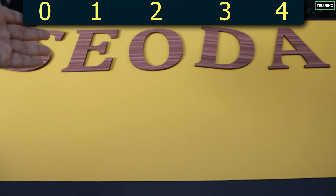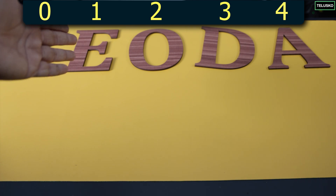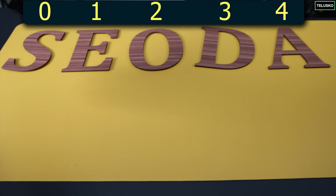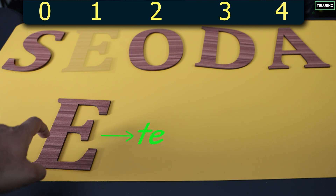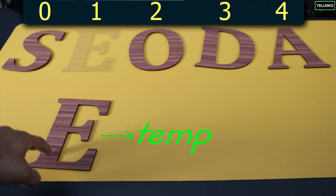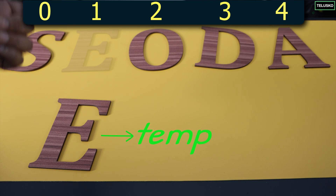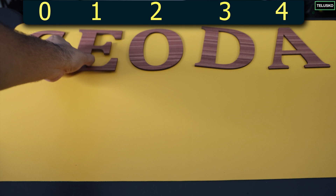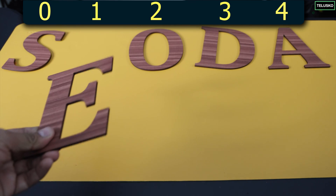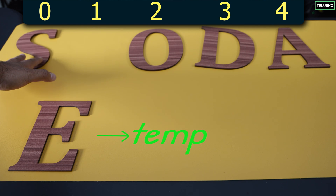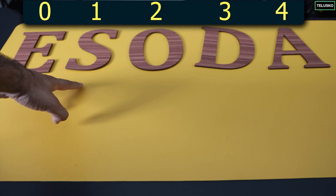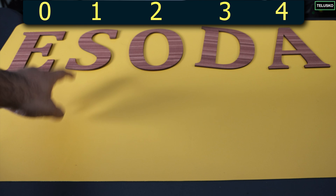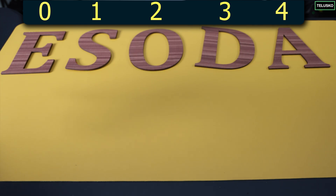You start with E. You check if E is at the right position by comparing E with S. E is not at the right position, so you take E out. In programming, you save the value of E in a temporary variable — you're not really moving E, just making a copy of it saved in a temporary variable. Then you move S to make space for E. Now check if there's any value before E — there isn't, so that portion is sorted.